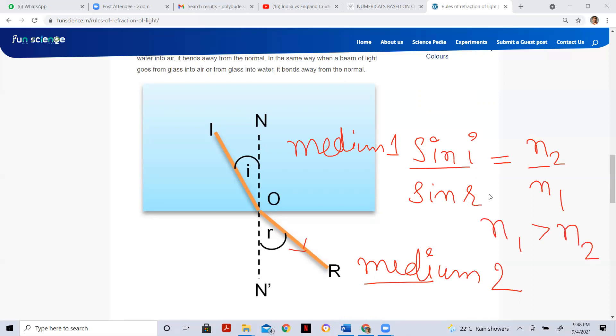Yes. So, that means in this case sin i by sin r will be less than 1. Yes. And that means sin i is less than sin r and ultimately angle i less than angle r. So, you can see here angle i is smaller than angle r. So, that's the reason why the ray bends away from normal.